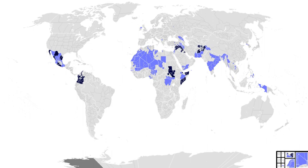Psychological warfare had its beginnings during the campaigns of Genghis Khan, through the allowance of certain civilians of nations, cities, and villages to flee, spreading terror and fear to neighboring principalities. Psychological actions have the primary purpose of influencing the opinions, emotions, attitudes, and behavior of hostile foreign groups in such a way as to support the achievement of national objectives.